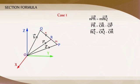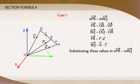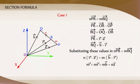Now, we have PR vector is equal to R vector minus A vector, and RQ vector is equal to B vector minus R vector. Substituting these values in N times PR vector equals M times RQ vector and simplifying, we get R vector is equal to M times B vector plus N times A vector divided by M plus N.